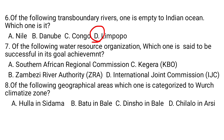Question number seven: of the following water resource organizations, which one is said to be successful in its goal achievement? A: Southern Africa Regional Commission, B: Zambezi River Authority, C: Kagera, D: International Joint Commission. The International Joint Commission, which is the US–Canadian commission, is said to be the most successful in its goal achievement. So D is the answer.